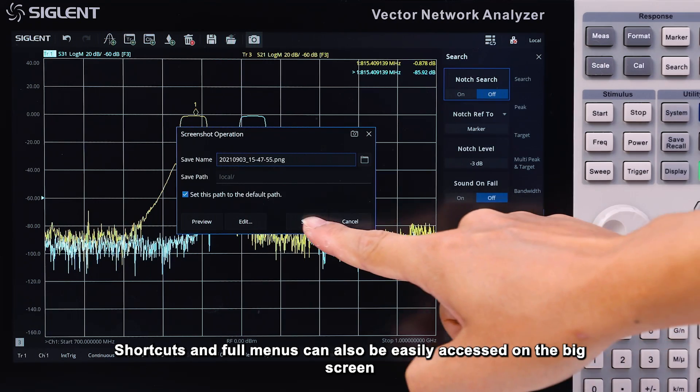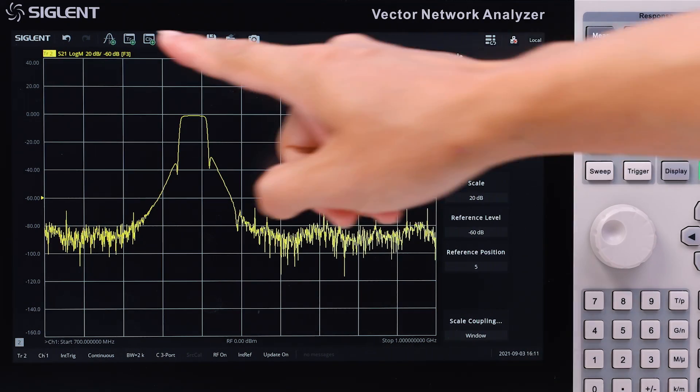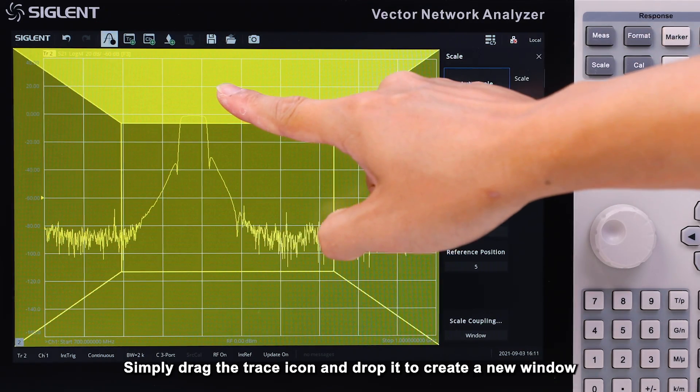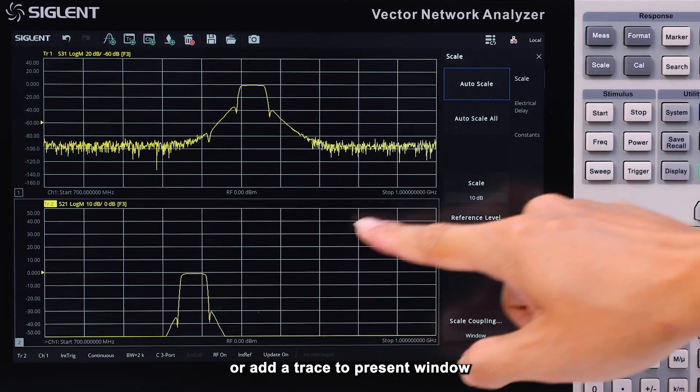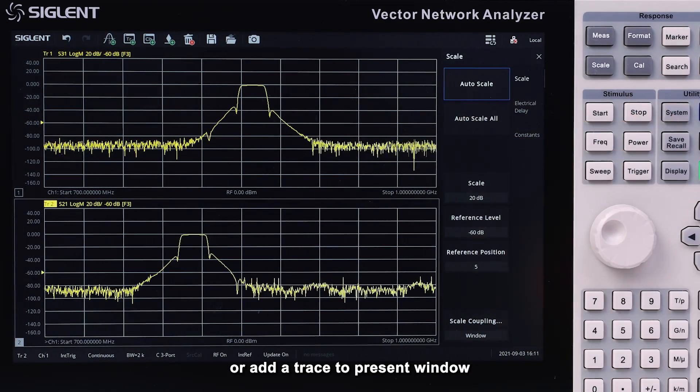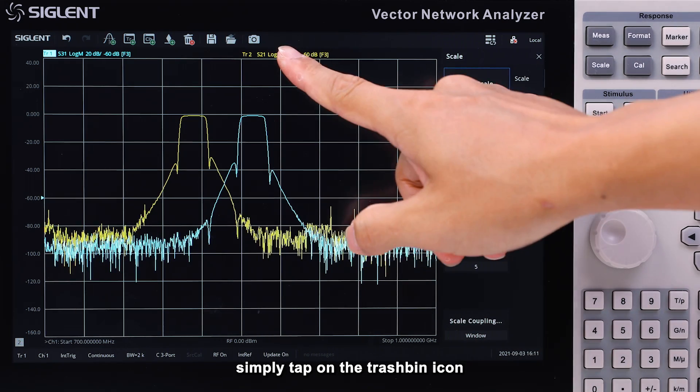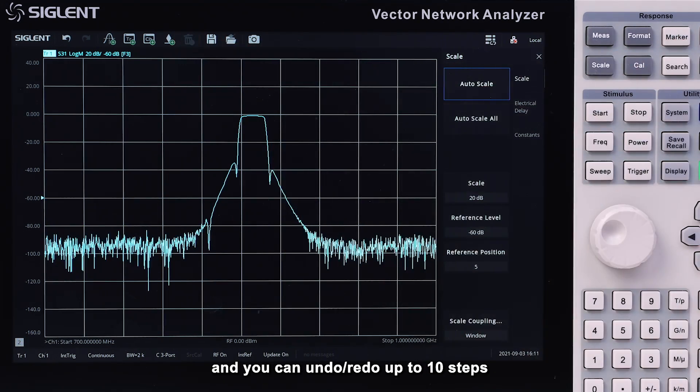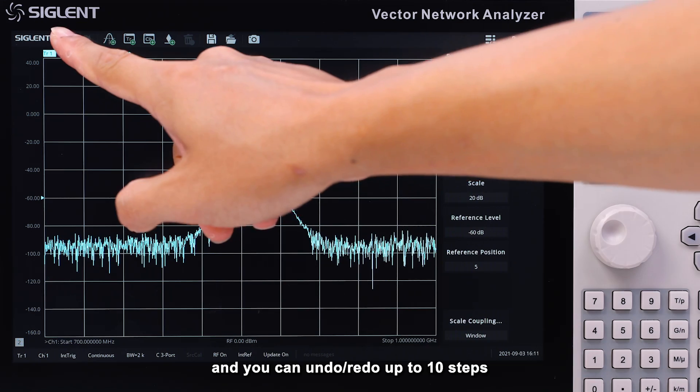Shortcuts and full menus can be viewed easily on the big screen. Simply drag the trace icon and drop it to create a new window, or add a trace to a present window. If you want to delete the activated trace, simply tap on the trash bin icon. You can also undo and redo up to 10 steps.